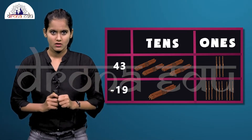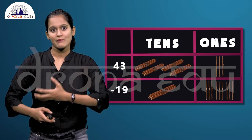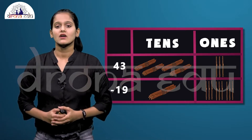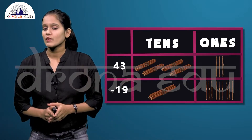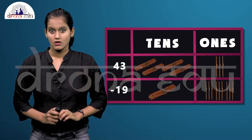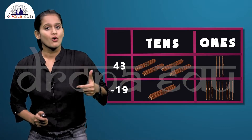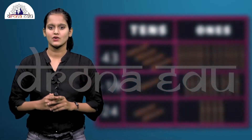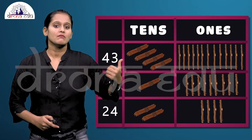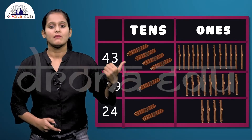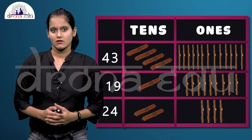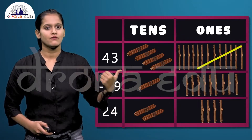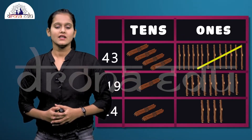The damaged sticks need to be removed. In the ones place, nine sticks cannot be taken out of three sticks, so we need to do borrowing. The three single sticks can be made into 13 sticks by taking a bundle from the tens place. On subtracting nine sticks from those 13 sticks, we get four sticks.